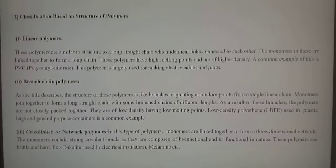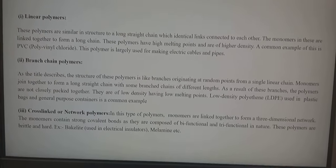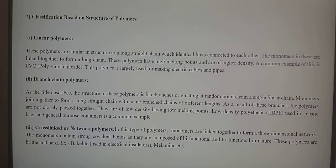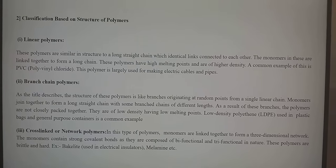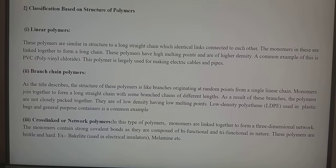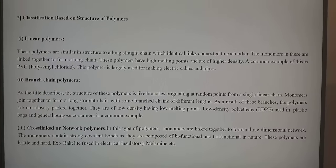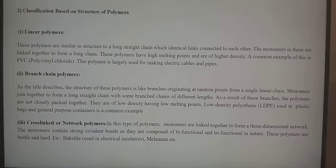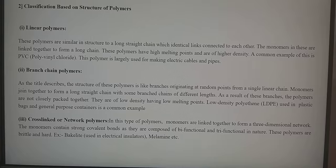The second category is based on the structure of polymers: linear polymers, branching polymers, and cross-linked polymers. Linear polymers have a structure similar to a long straight chain with identical links connected to each other. The monomers are linked together to form a long chain. These polymers have high melting points and higher density. Examples include PVC, polytetrafluoroethylene, polystyrene, and many others.